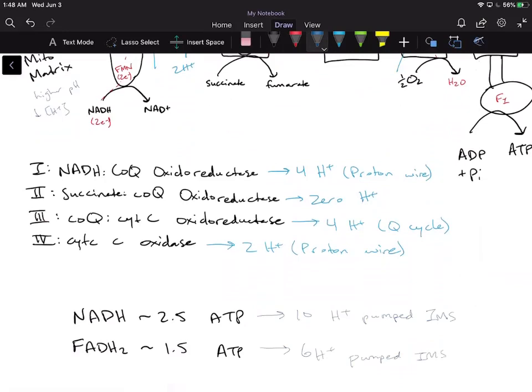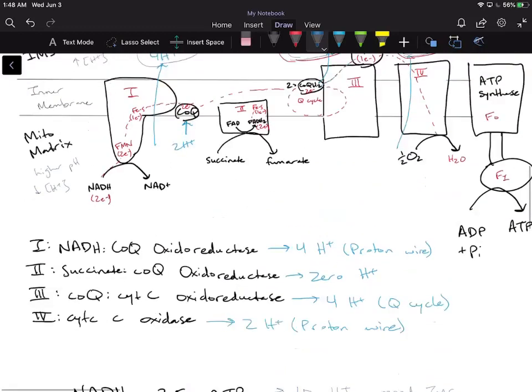Now what we say, and this is just an experimental average, is that the number of protons required on average to make an ATP is going to be 4. This is just something which requires more detail on how the ATP synthase works.